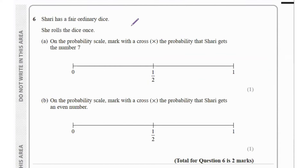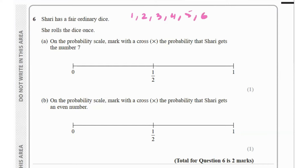Question 6 says Shari has a fair ordinary dice and rolls it once. We need to mark on the probability scale the probability that she gets the number 7. On a fair ordinary dice we have numbers 1, 2, 3, 4, 5, and 6 — six sides, each with one number. The probability of getting a 7 is 0, because 7 doesn't exist on the dice.